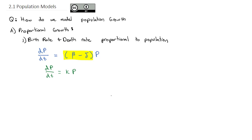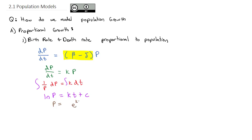This is a separable differential equation. We can solve it by dividing both sides by P and multiplying both sides by dt. Then we can integrate it to get that the natural log of P is equal to a constant times t plus our integration constant. If we exponentiate both sides, we get that the population is equal to e to the kt times e to the C, which is just another constant.